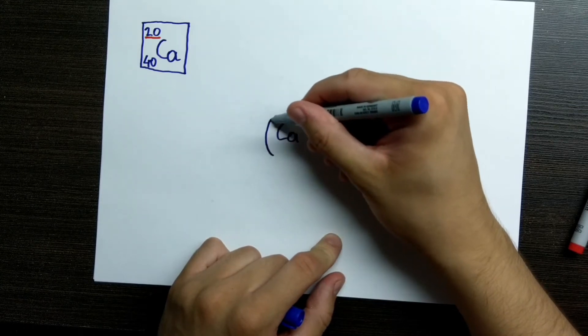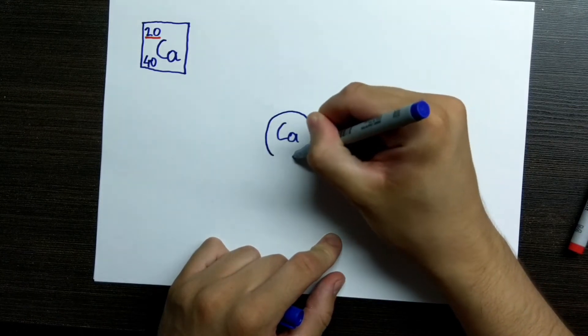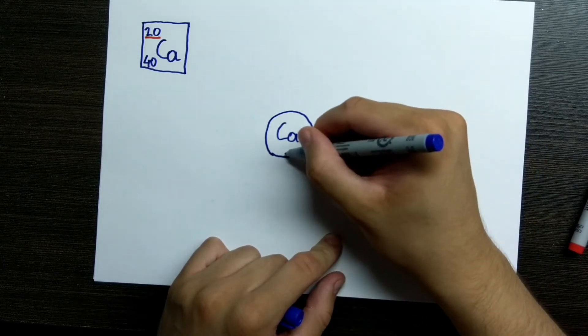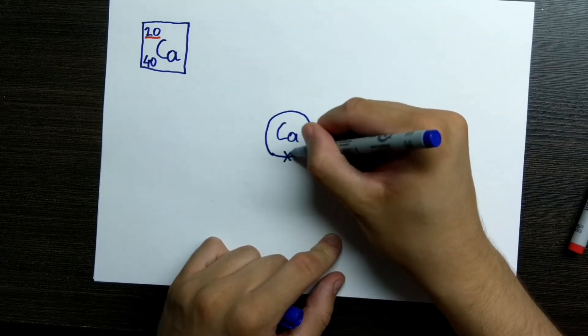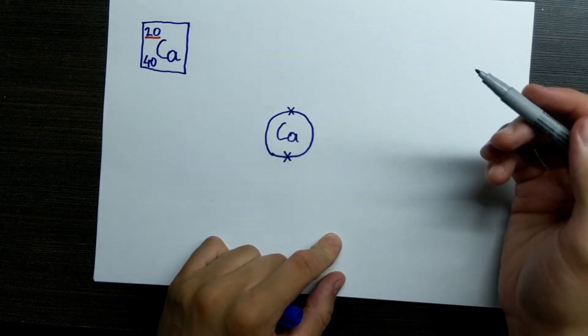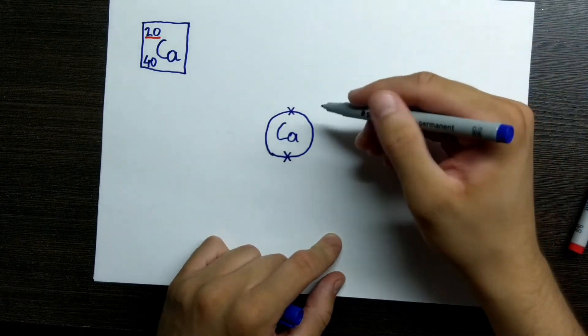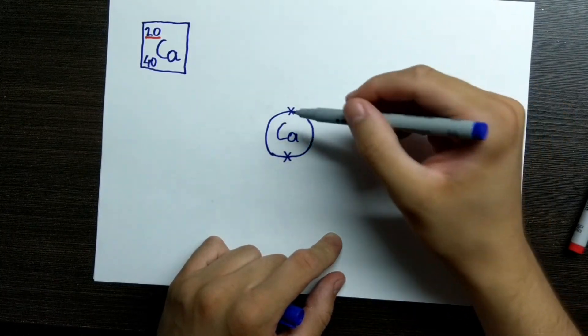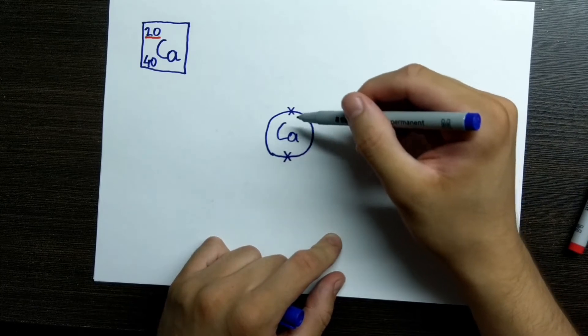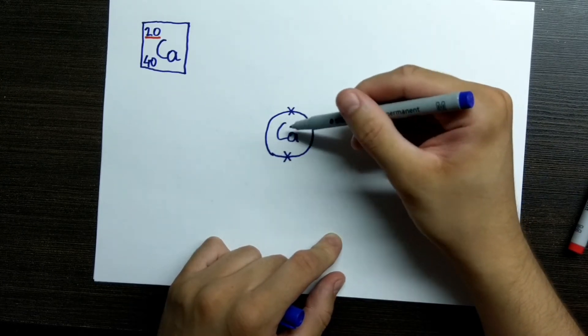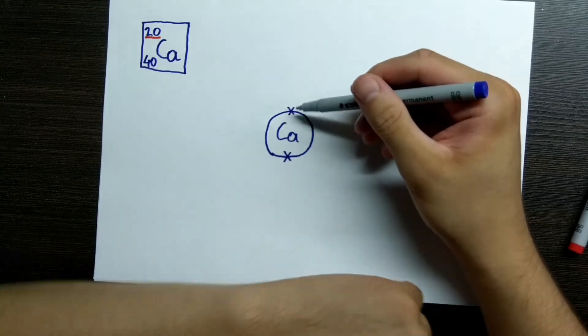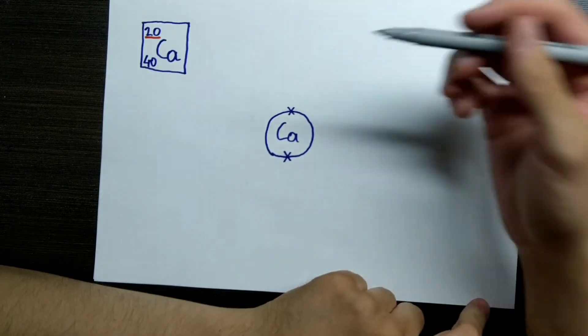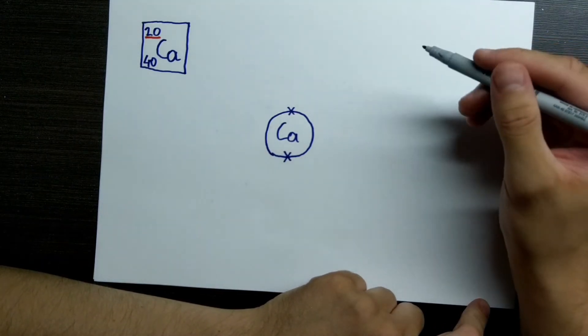First shell is right there. Lowest energy. And here we have two electrons. Because, as we said, two fit in the lowest energy level. And those two would have the lowest energy. And that's why they're the closest. Because they cannot free themselves as much from the proton pool.